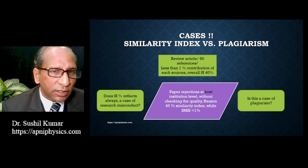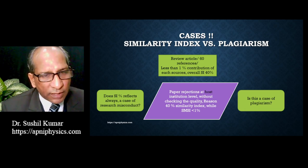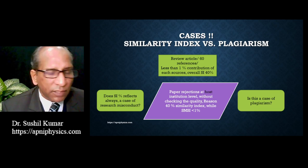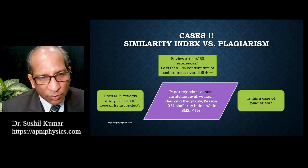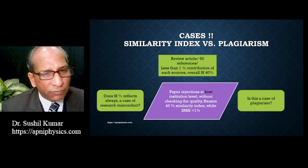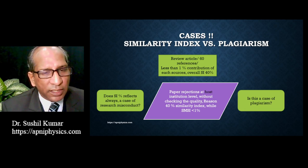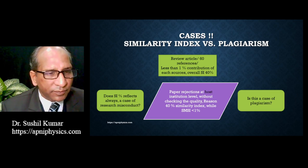If you are using 60 references in a review article, and each reference basically carries either one or less than one percent contribution to the similarity index — what is called the single match similarity index — then suppose your overall similarity index comes to 40 percent.